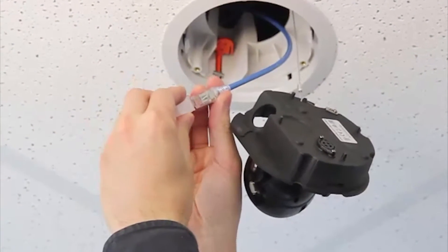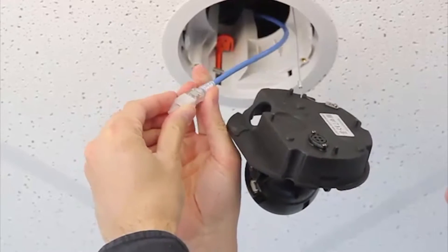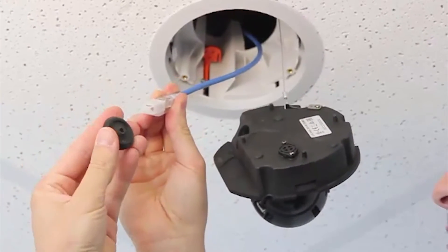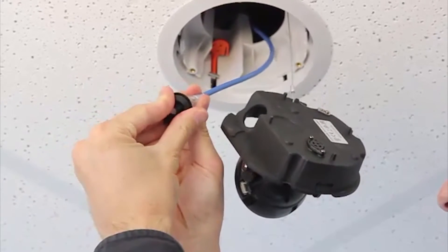Next, install the grommet into the cable entry hole on the camera base. Make sure the grommet flange is securely seated on the inside and outside of the cable entry hole.